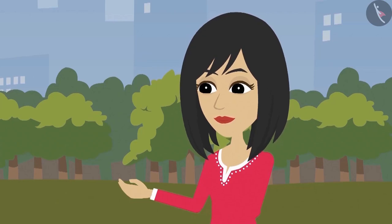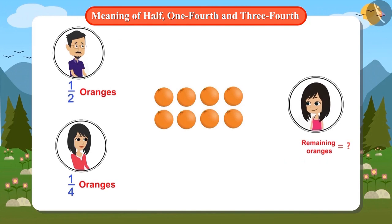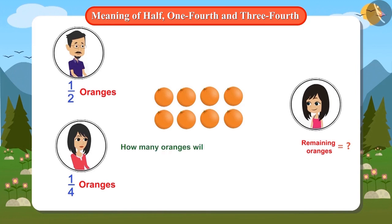Mummy tells Neha that out of these oranges, she will give half of the oranges to papa, keep one-fourth oranges with herself and give the remaining oranges to Neha. Can you guess how many oranges will Neha get? To find out, we first have to find out how many oranges will mummy and papa get. That is, we have to add half and quarter of total oranges.